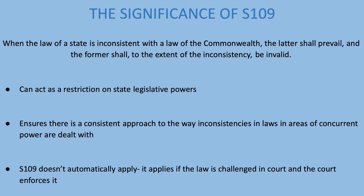This is significant as it can act as a restriction on state legislative powers. It also ensures that there is a consistent approach to the way inconsistencies in laws in areas of concurrent power are dealt with. Concurrent powers are those shared between the Commonwealth and the states — examples include marriage, divorce, and taxation.